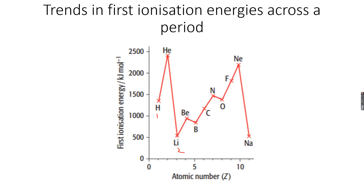When we go across the period, the first ionization energy increases — that's the general trend. So from the start of the period to the end of the period, the general trend is that ionization energy is increasing.